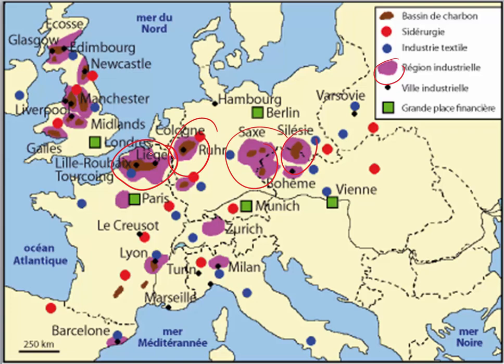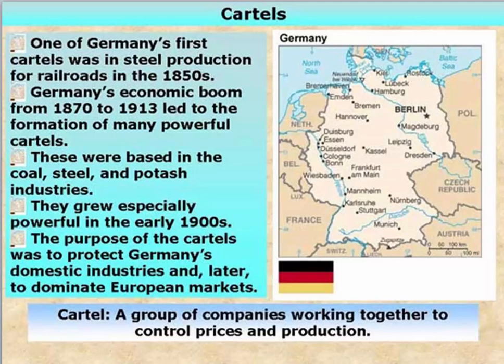We also start to see cartels begin to develop — a group of companies working together to try to control prices and production. We see a lot of this in Germany in the areas of steel and railroad production. The purpose of the cartels was to protect Germans' domestic industries.